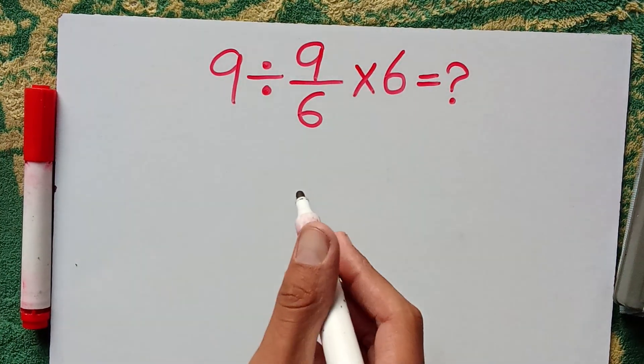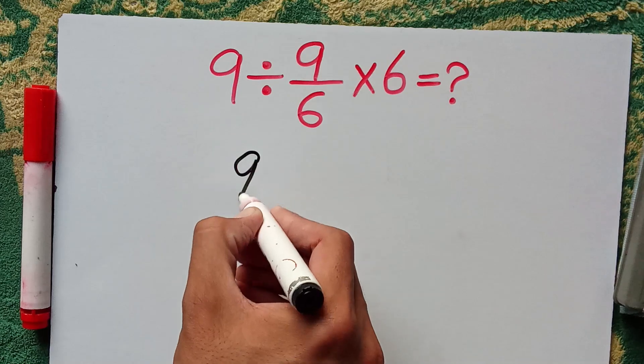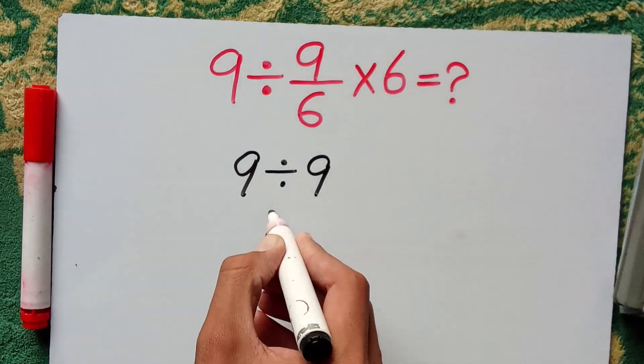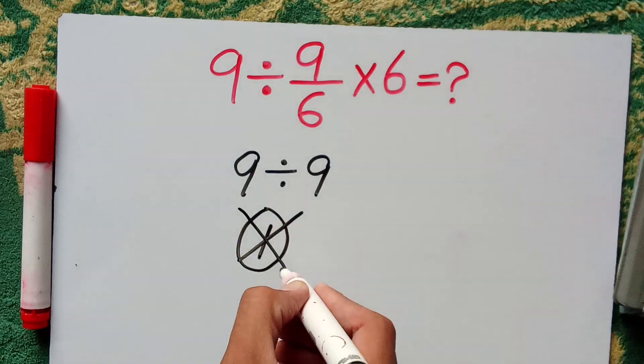6 and 6 cancel with each other and 9 divided by 9 equals 1. But this answer is absolutely wrong.